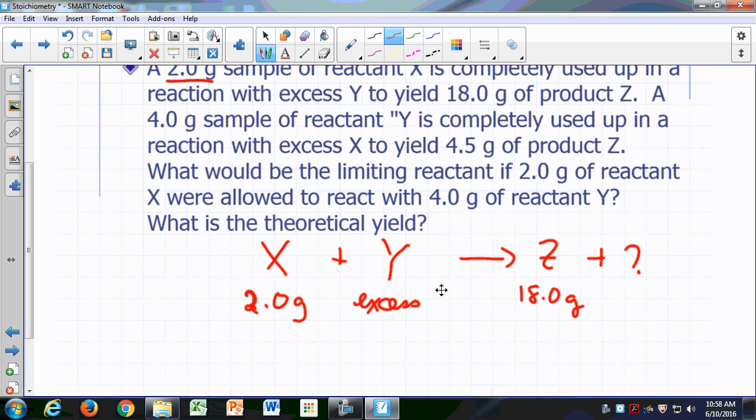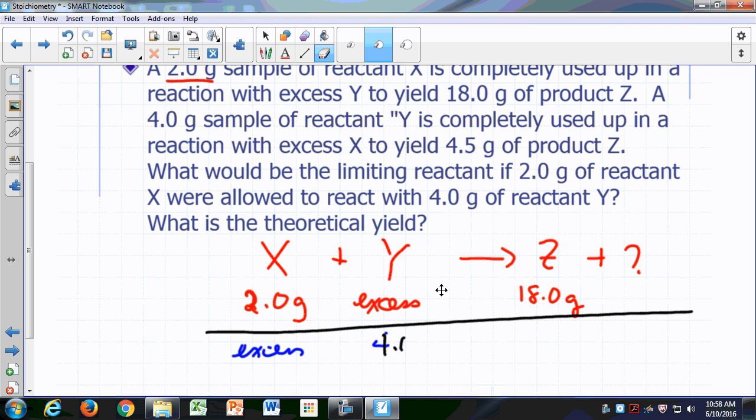So what if instead you mix an excess amount of X? The other possibility we're going to look at is if you have an excess amount of X and you mix it with 4 grams of Y. So 4 grams of Y, you use it up completely and you still have excess X. You only make, according to this, if you only make 4.5 grams of Z.